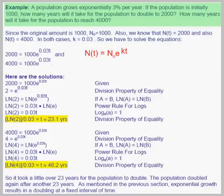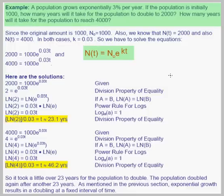In this example we're going to look at a population that grows exponentially at 3% per year. If the population is initially 1,000, how many years will it take for the population to double to 2,000? Also, how many years will it take for the population to go from 1,000 to 4,000? We're going to use the model n as a function of t equals n sub not times e to the kt.